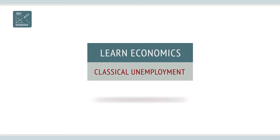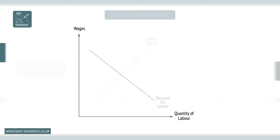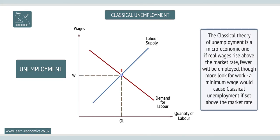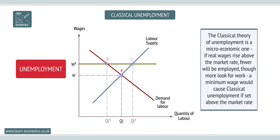Classical Unemployment. An increase in real wages at W will cause the demand for labour to contract and the supply to extend. This is the classical theory of unemployment. If real wages rise above the market rate, fewer will be employed, though more look for work.